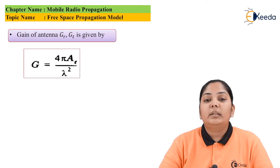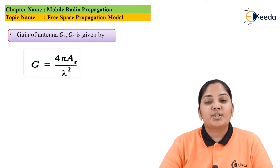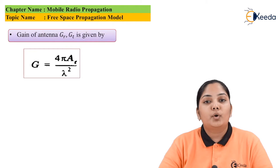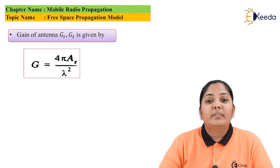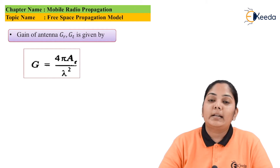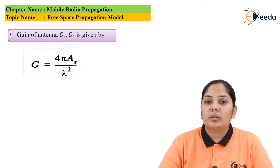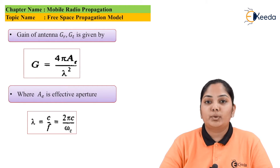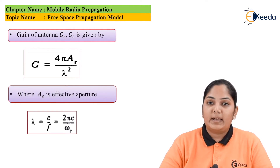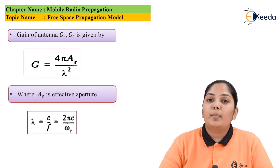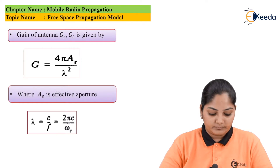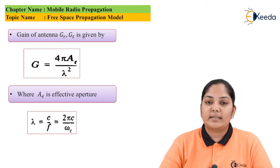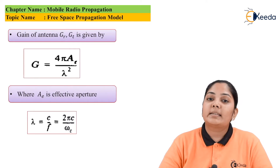The gain of the antenna Gt and Gr is also given by 4πAe / λ², where Ae is the antenna aperture, which depends on the dimension or size of the antenna. Lambda is given by c/f, where c is the speed of light in free space divided by the frequency, which can also be written as 2πc / ωc, where ωc is the angular frequency.